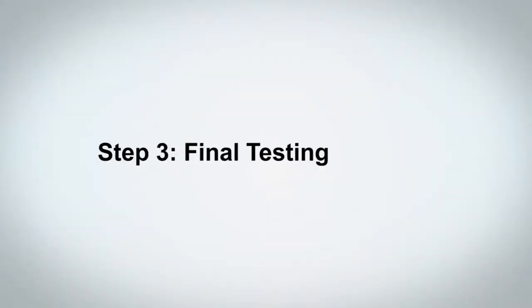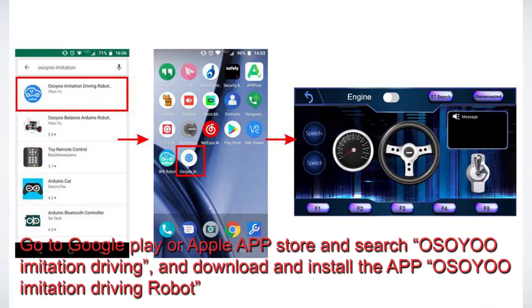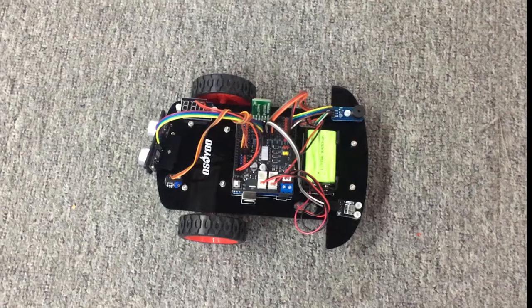Step 3: Final Testing. Go to Google Play or Apple App Store and search Osio Imitation Driving, then download and install the app Osio Imitation Driving Robot.